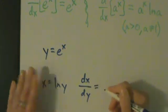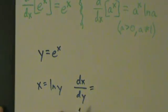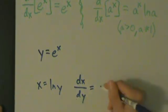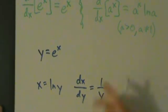So dx dy, we know the derivative of the natural log, we know that's 1 over, in this case y, because our variable is y. So the derivative of the natural log function is 1 over the variable if you just have it like this. So dx dy is 1 over y.